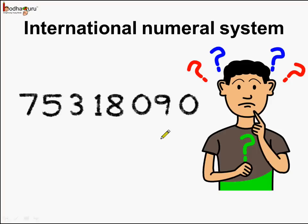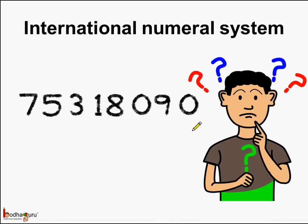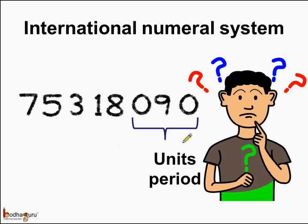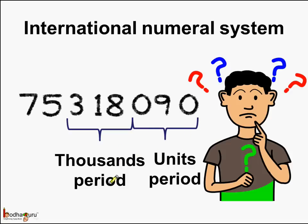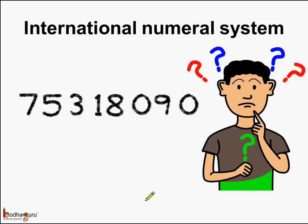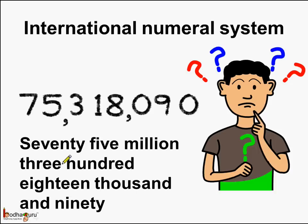Now let us read the same number according to the international numeral system and put the commas according to it. Starting from the rightmost digit, we know there is the units period which consists of three places, followed by the thousands period which also consists of three places, and the next three digits are of the millions period. We will put the commas according to the periods. First comma after the units period, then next comma after the thousands period. So the number becomes seventy-five million, three hundred eighteen thousand and ninety.